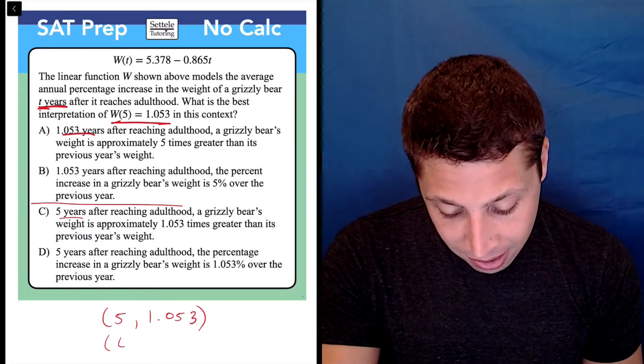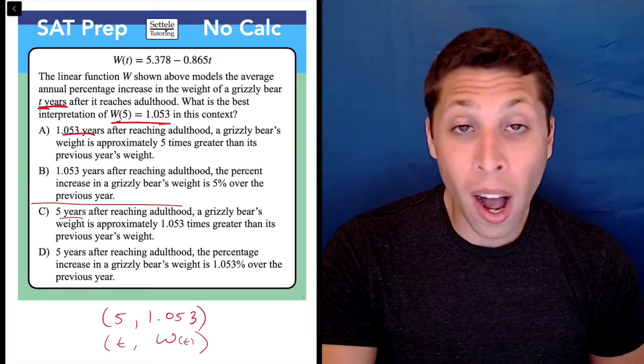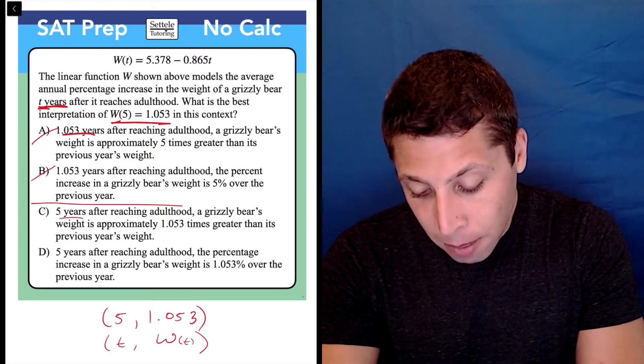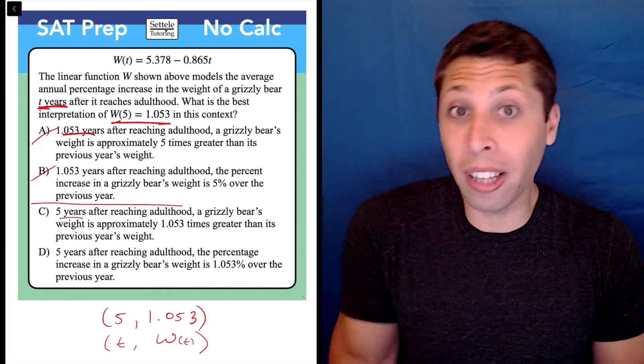So if that's the case, this is T, W of T is the Y. Well, we need to get rid of A and B right away because the 5 has to represent the number of years. We're just literally matching units.